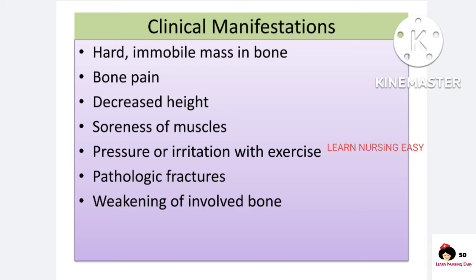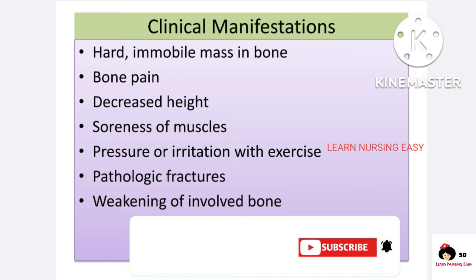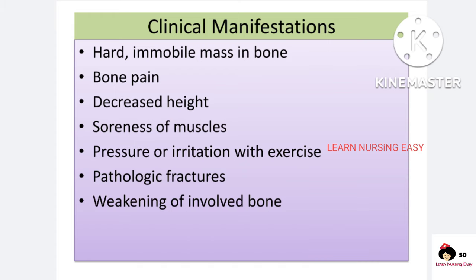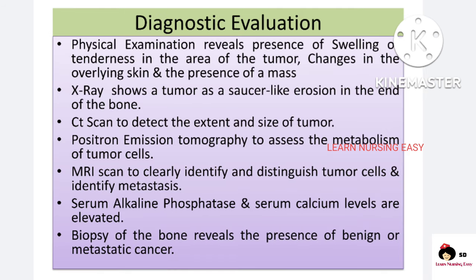In clinical manifestations, while palpating we can feel a hard, immobile mass which is cancer tissue. There will be severe bone pain and the height of the client may be decreased because cells do not grow longitudinally. Soreness of muscles is seen, as well as pressure or irritation when walking or doing exercises. These persons are also prone to pathological fracture — meaning even a small slip can cause them to fall and break the bone due to destruction or weakening of the bone.